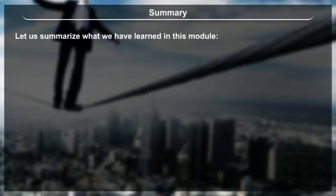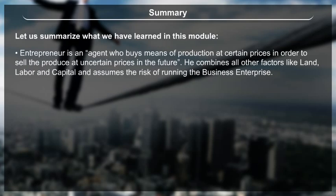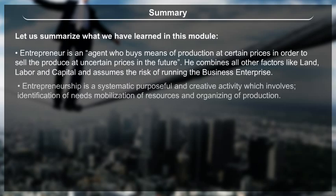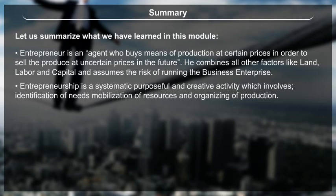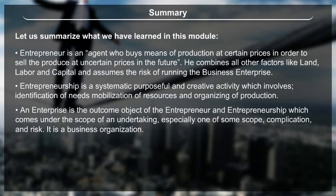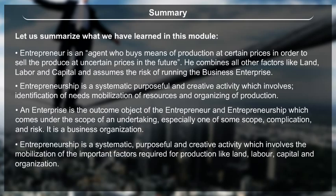Summary. An entrepreneur is an agent who buys means of production at certain prices in order to sell the produce at uncertain prices in the future, combining factors like land, labour and capital and assuming the risk of running the business enterprise. Entrepreneurship is a systematic, purposeful and creative activity involving identification of needs, mobilization of resources and organizing of production. An enterprise is the outcome of the entrepreneur and entrepreneurship — a business organization of some scope, complication and risk.